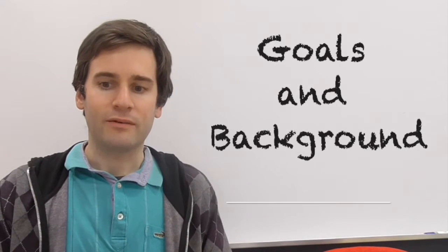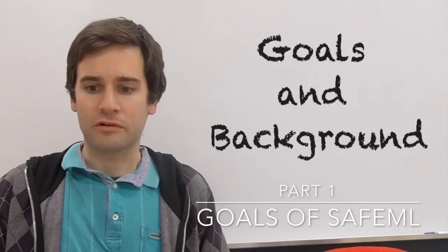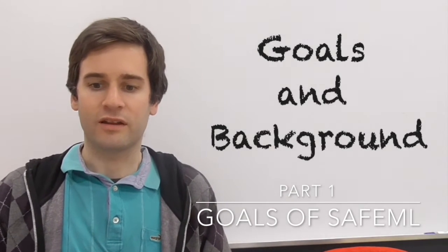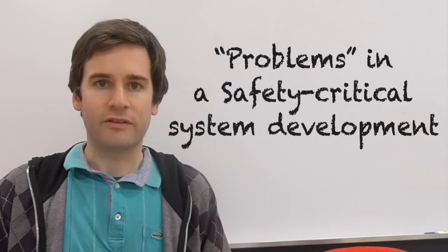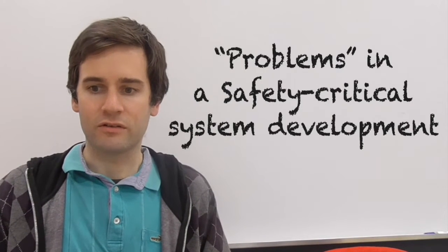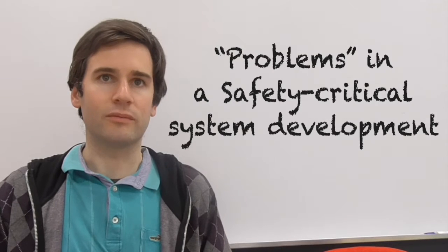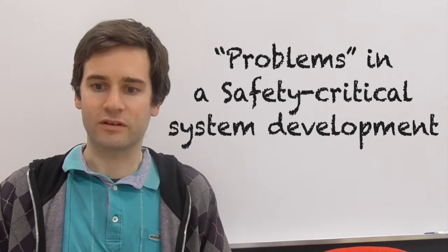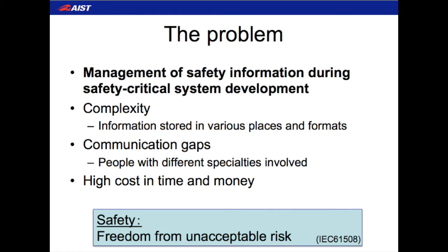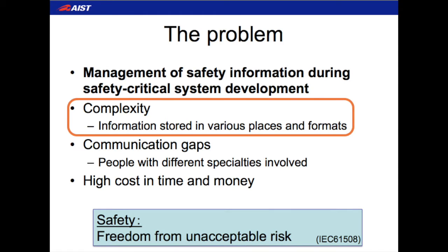I'm going to start with part one, which will explain the goals of what I'm going to be talking about today and the background about the work we're doing. The problem that we're dealing with is that safety information is extremely difficult to manage during the development of a safety critical systems project. This is due to various factors including the complexity of the information — it's dealt with in various different places, in different formats and with different people.